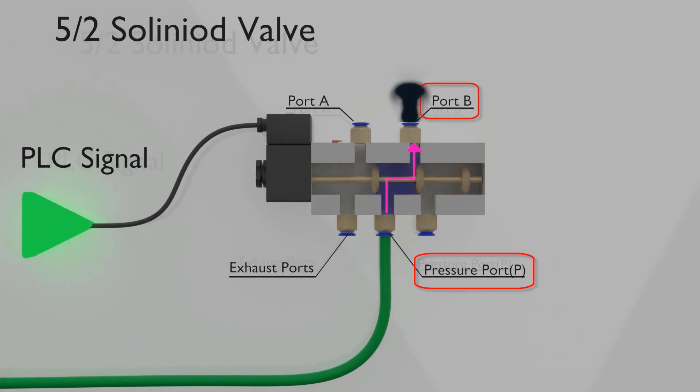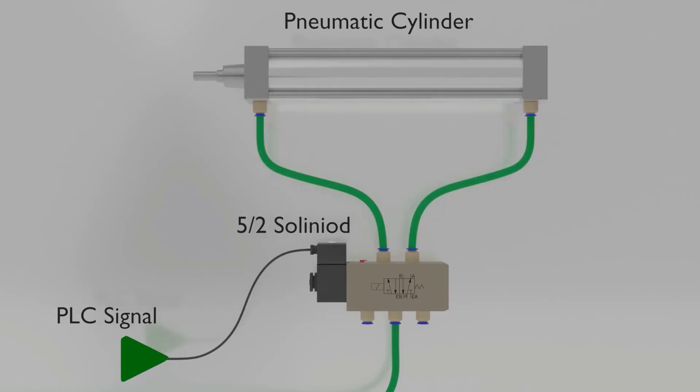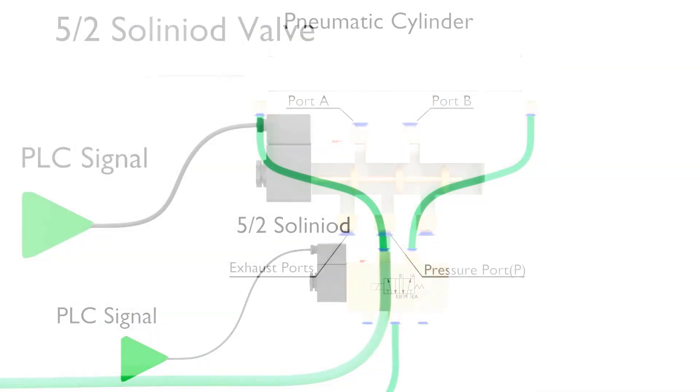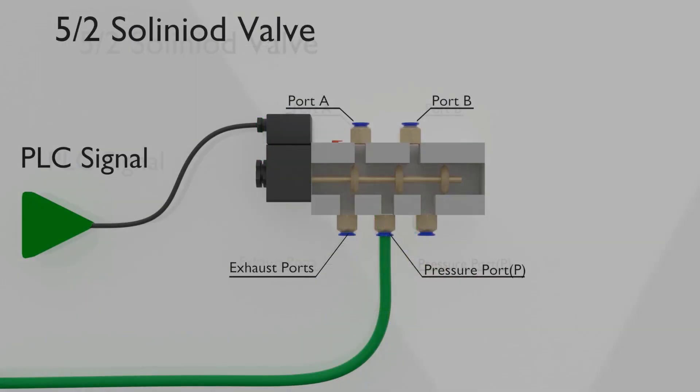Spool moves when solenoid coil is energized by the signal coming from the PLC. This PLC signal is a digital signal which is either on or off. There are other ports in the solenoid which are exhaust ports. We will explain what are these ports shortly.